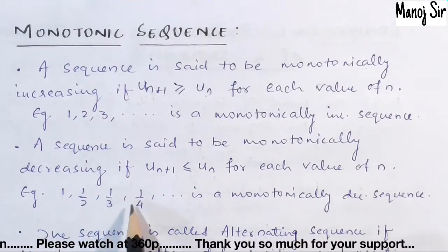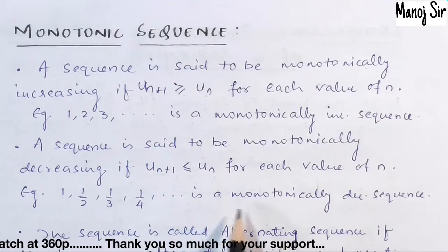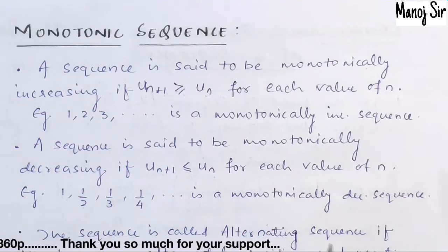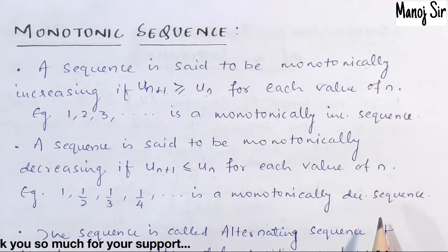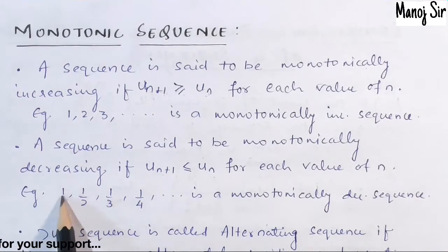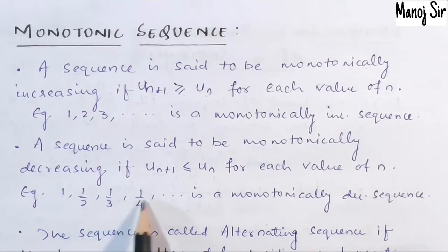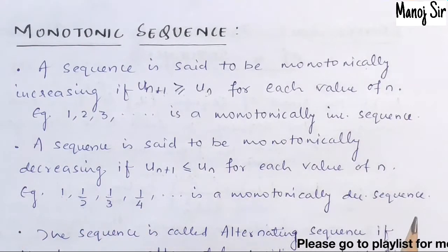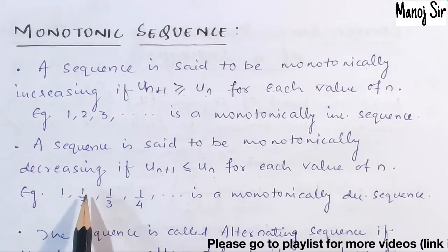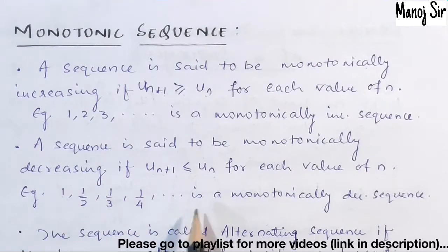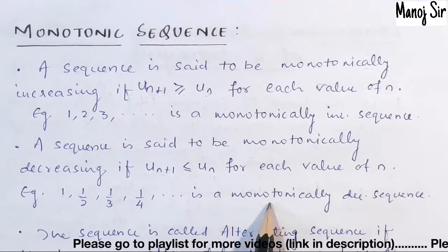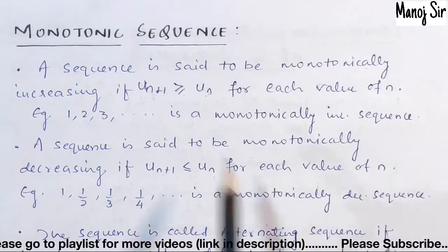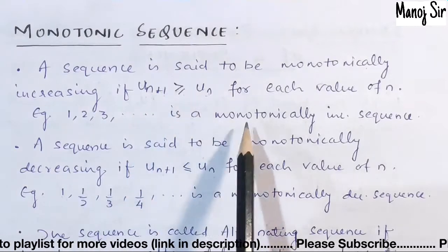For example, 1, 1/2, 1/3, 1/4, ... is an example of a monotonically decreasing sequence. Here the values are 1, 0.5, 0.33, 0.25 — you can see the values continuously decreasing. The next value is always less than the previous value.